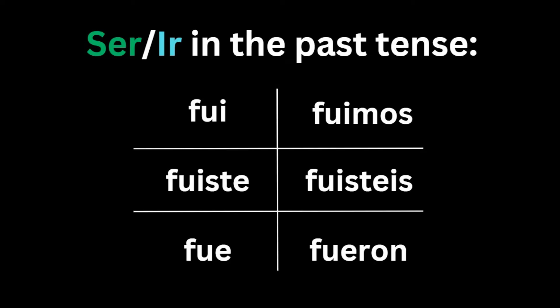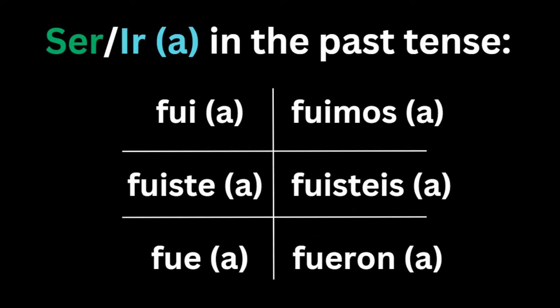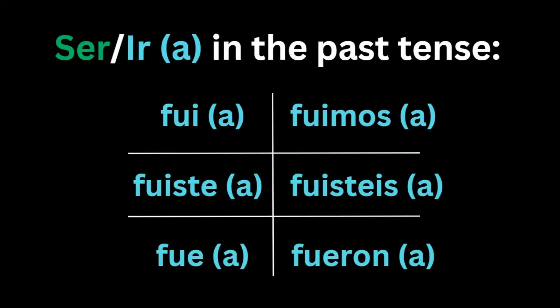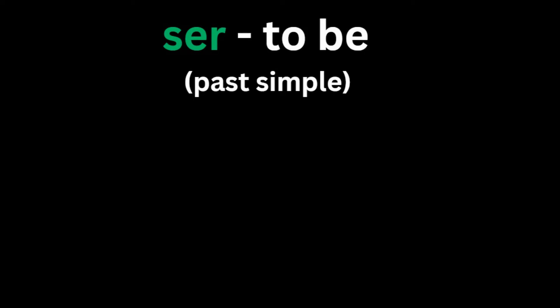The biggest tip I can give for telling the difference between ser and ir in the past simple is that if you see a conjugation and you don't know which one it is, try looking for the preposition a after the conjugation. If there is an a with or without an infinitive, the verb is ir because there isn't much of a change from its form in the present. Understanding how the verb ser works in the past simple is actually a bit more difficult to comprehend due to its variations in the past.